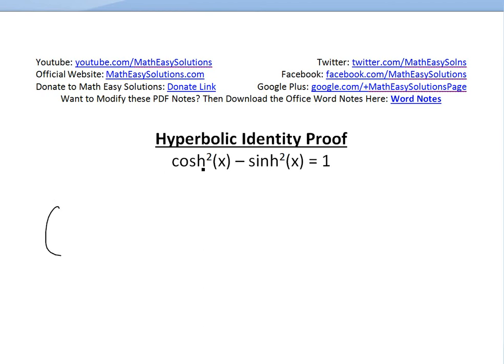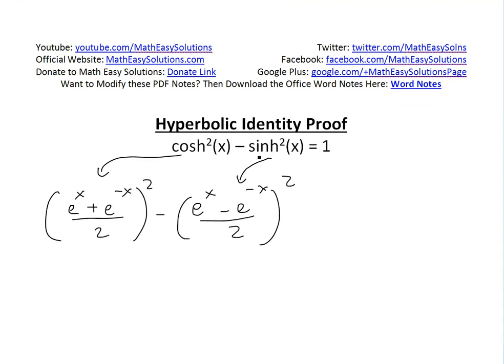For cosh squared, this is just going to be e to the x plus e to the negative x divided by 2, and then all squared. So this function is this one right here, and that's the cosh. Then we're subtracting by e to the x minus e to the negative x divided by 2, and this is all squared. That's the only difference is the negative for this sinh.